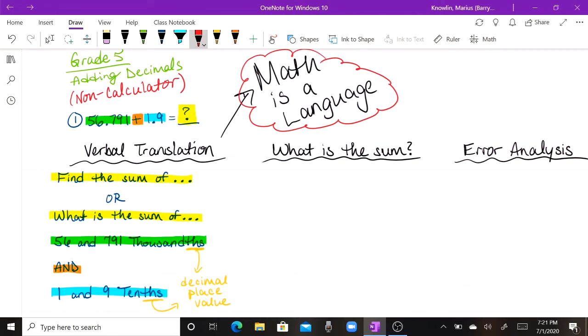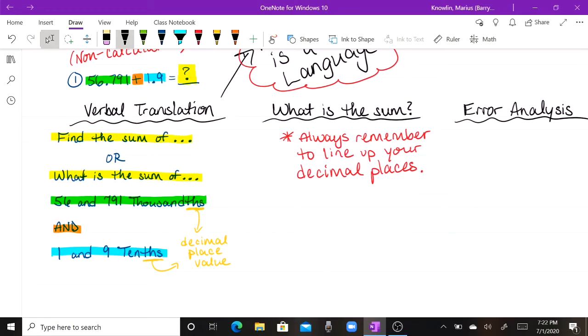All right, let's take a look. Let's actually go ahead and do what the problem is calling for. Or actually find the answer. So with that being said, there's one main thing to remember here. Always remember to line your decimals up. To line up your decimal places. So what is that going to look like? Right now the problem is written horizontally. I want to write it vertically.